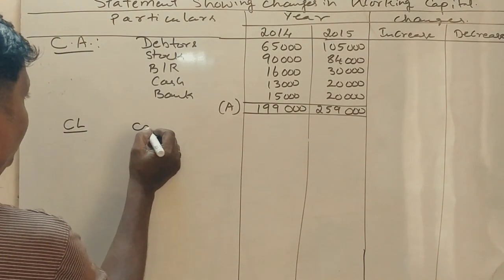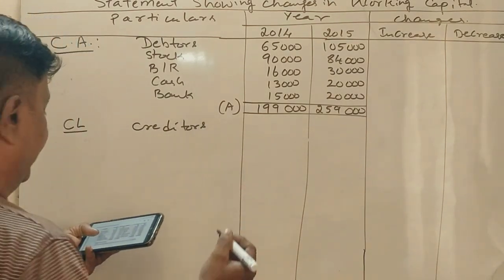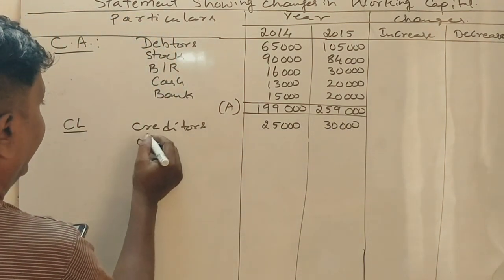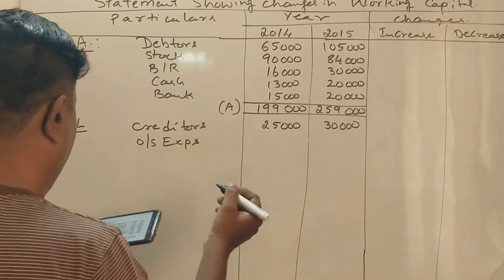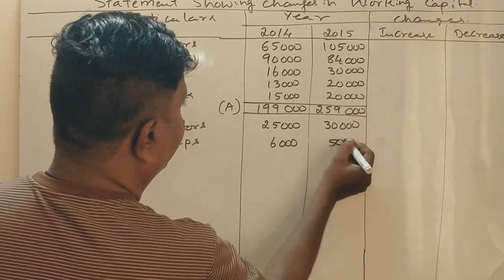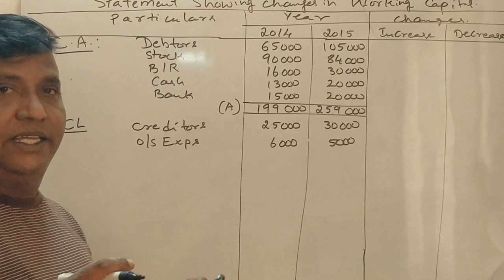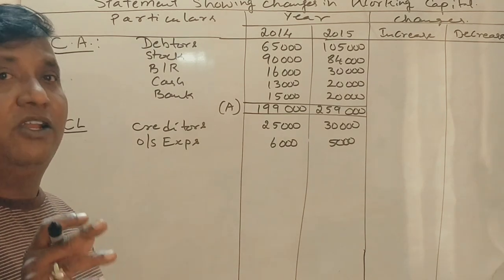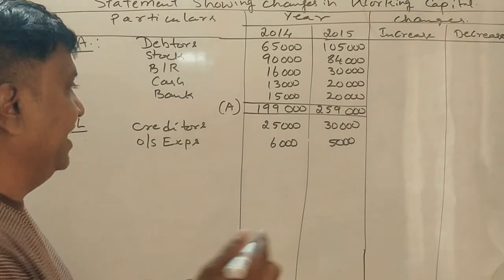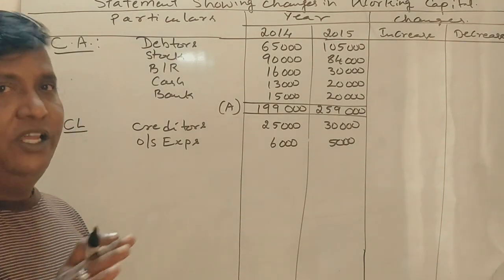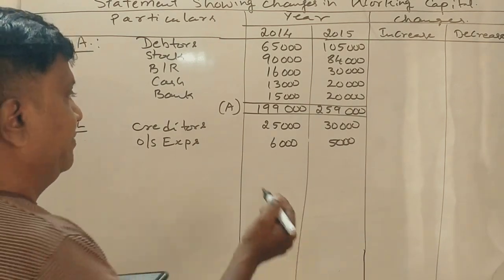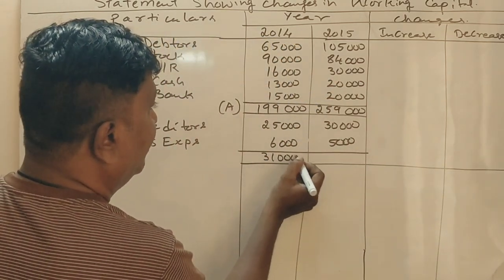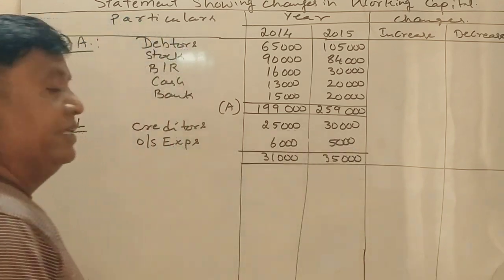The current liabilities include: creditors — 25,000 and 30,000; outstanding expenses — 6,000 and 5,000. Proposed dividend and provision for taxation are treated as non-current liabilities. The total current liabilities are 31,000 and 35,000.